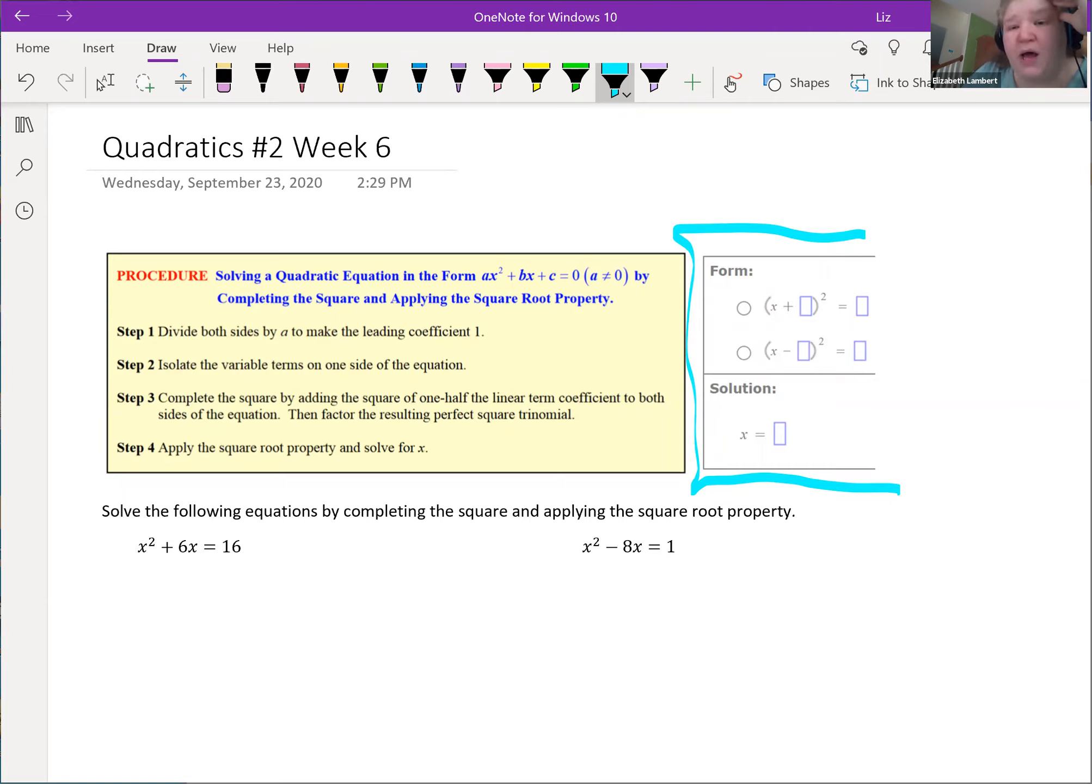So pay attention to that. It means the number you put in the box here is going to be positive. You won't put a sign on that number because you're going to pick the sign with the plus or the minus. And then you'll put in the solution and they usually want the solution as two separate answers. So you'll have to do, like if you get something that looks like a quadratic formula answer, you're going to have to do one answer with the plus and then a comma and then one answer with the minus if it doesn't work out to pretty numbers.